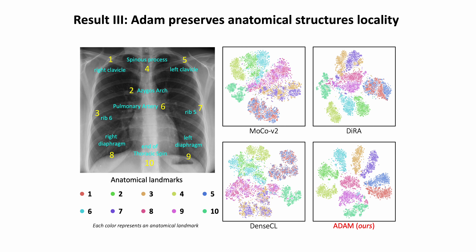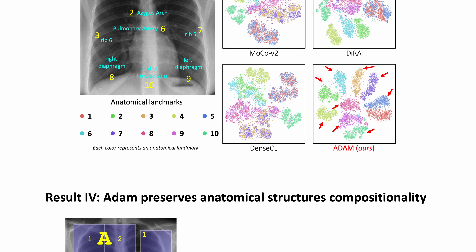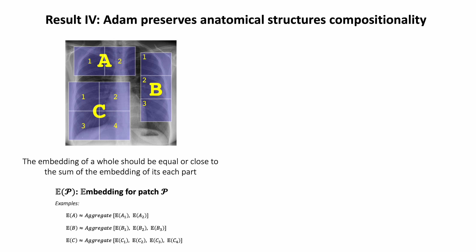We investigate ADAM's ability to learn anatomical structure locality by extracting features of 10 random anatomical landmarks across different patients using our ADAM model and visualizing them with a t-SNE plot. As seen, existing self-supervised methods lack the ability to discriminate different anatomical structures, but ADAM effectively distinguishes anatomical landmarks, resulting in well-separated clusters in its embedding space.